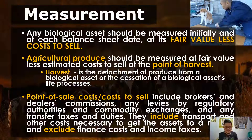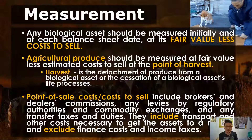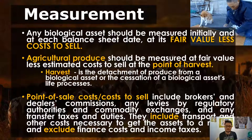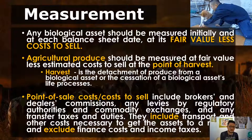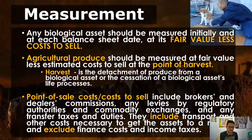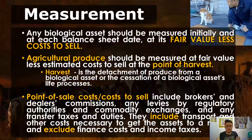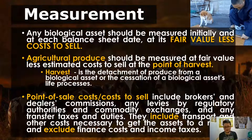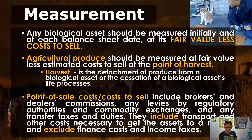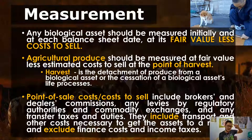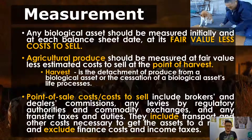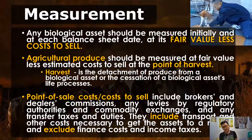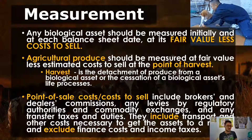Ask yourself: is the cost necessary in order to be able to sell the asset? For example, how can you sell your crops if you are unable to transport them to a market? If you are selling through a broker, you will have to pay the broker's commission. And to make transactions legal, there will be levies by regulatory authorities, transfer taxes, and duties. So that's point of sale costs — cost to sell. For biological assets: fair value less cost to sell, initial and subsequent. For agricultural produce: at point of harvest, the fair value less cost to sell is the cost of the inventory.